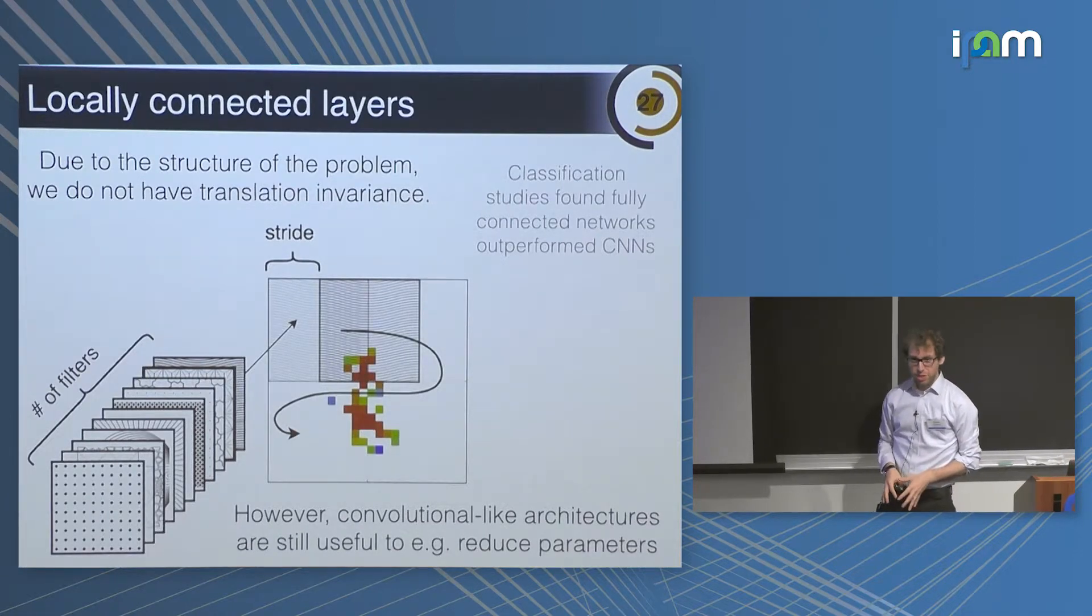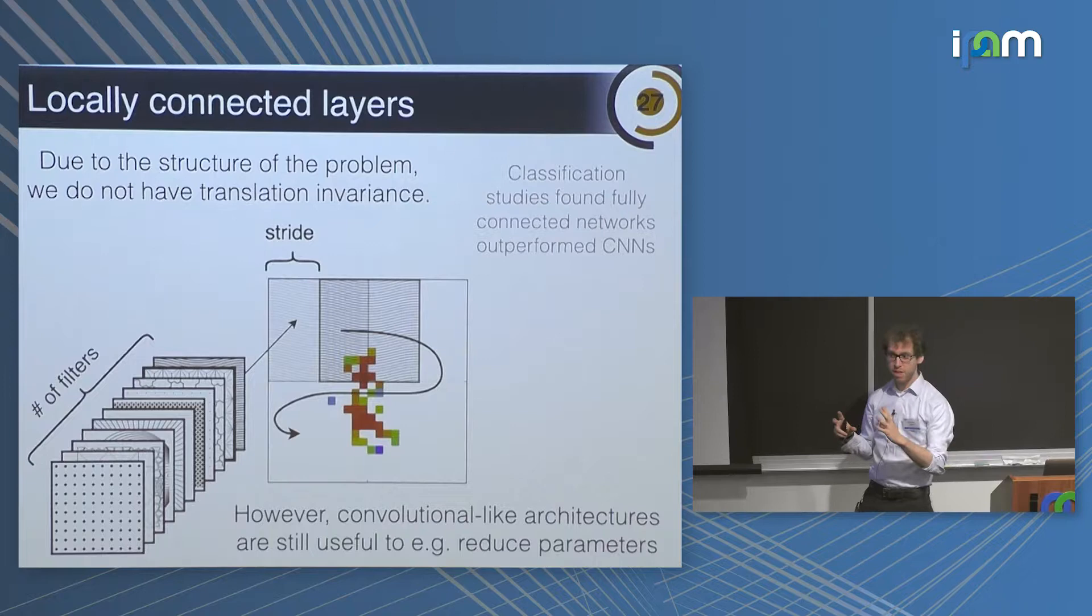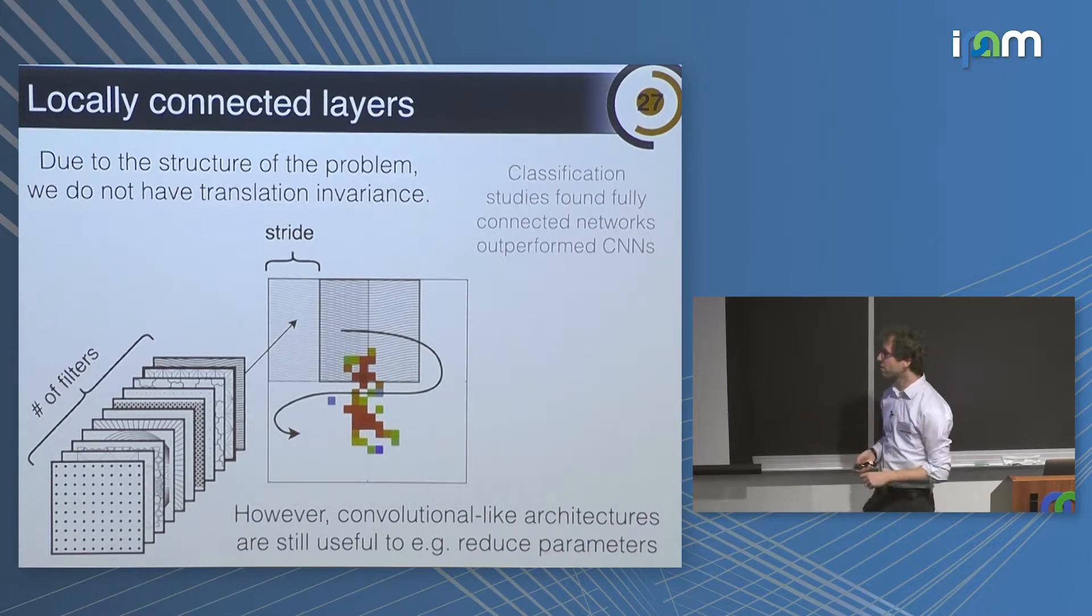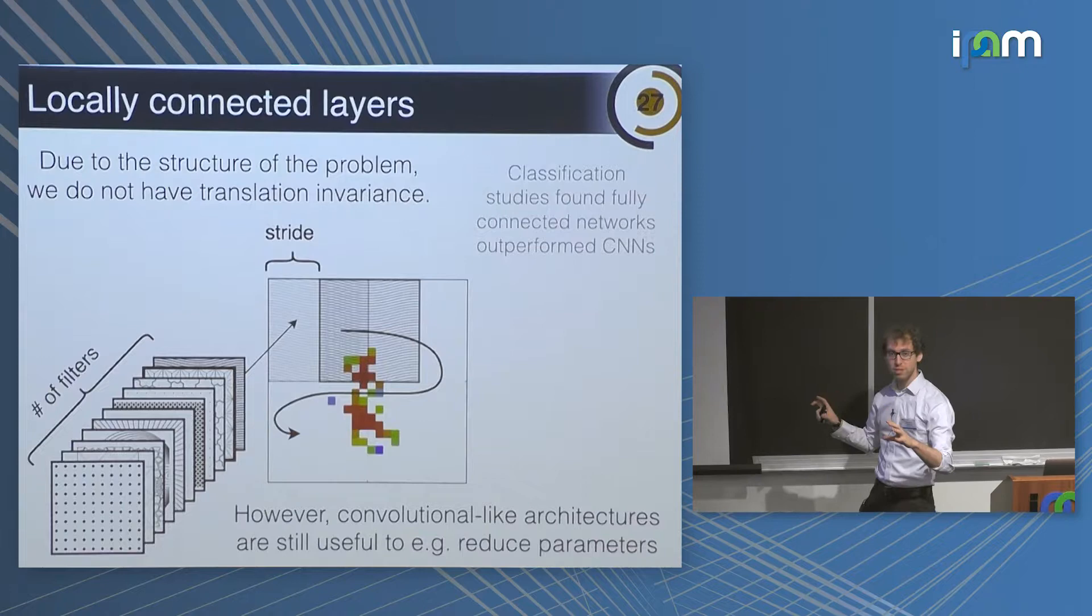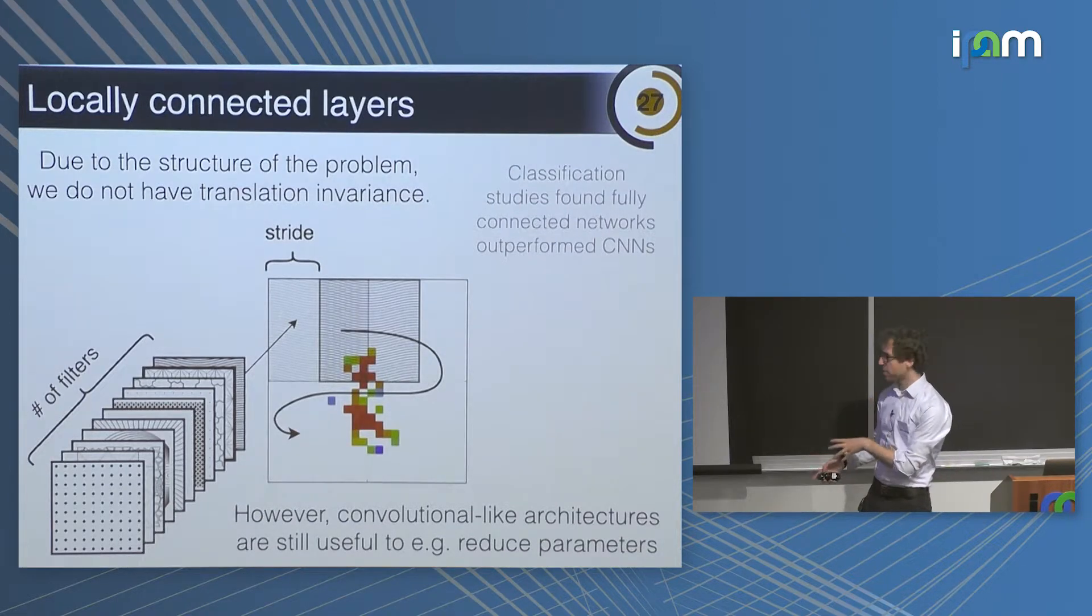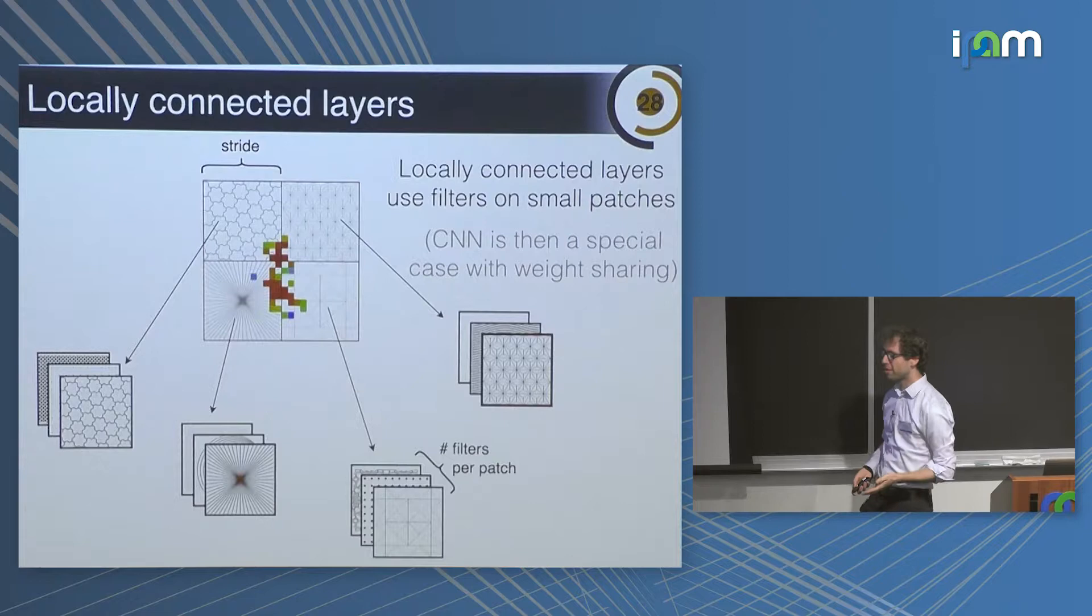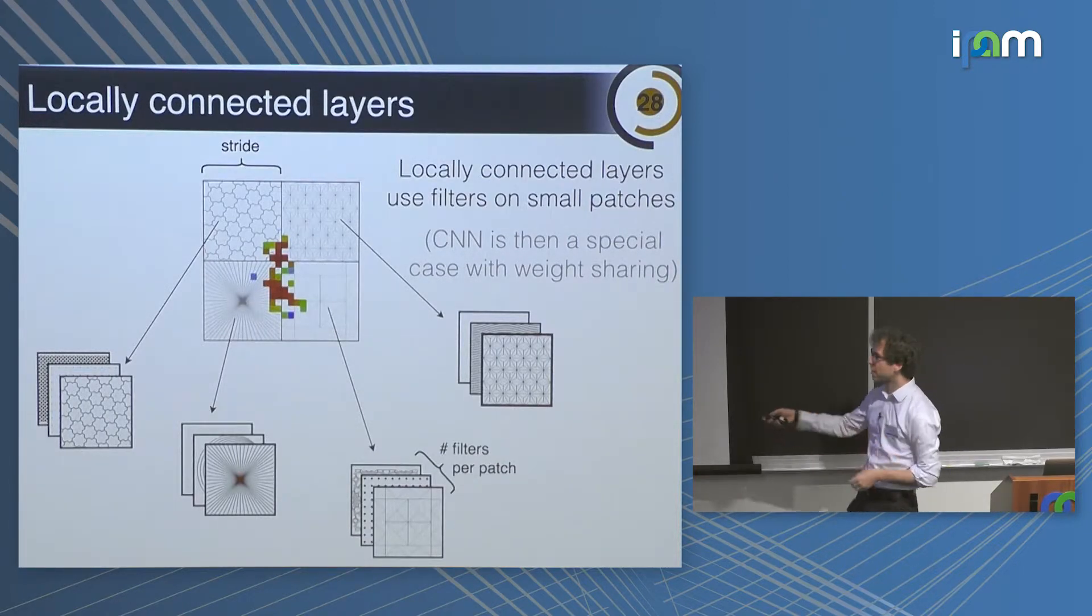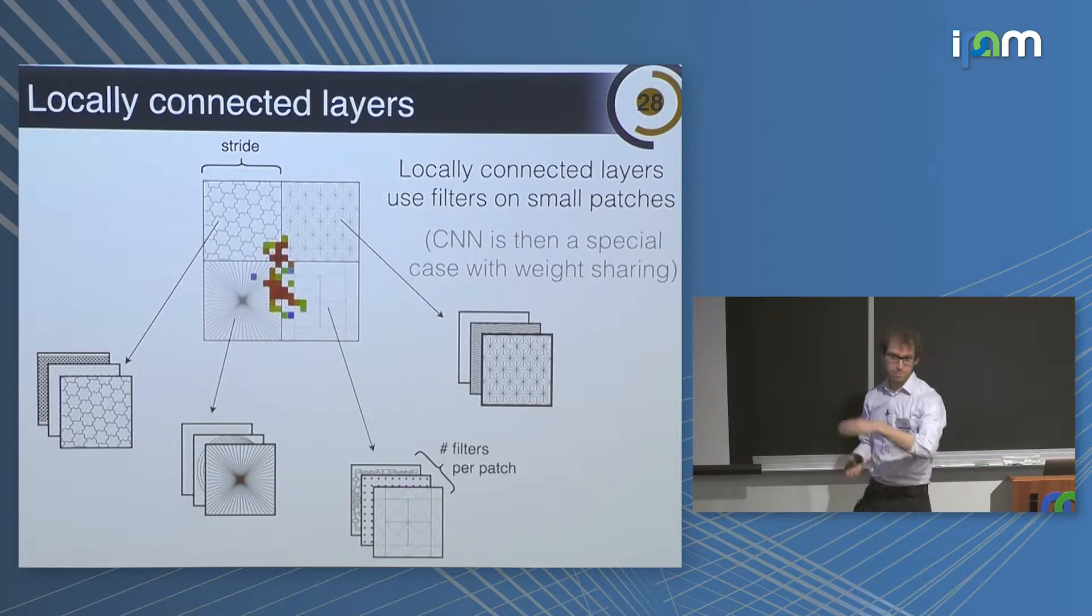Now I'll say a bit more about these locally connected layers. For images, the first thing you might think of using is a convolutional neural network. However, the way these images are set up, we've already centered them and there's no rotational or translational degrees of freedom. A convolutional neural network is actually not that great because we don't have any translation invariance. However, it would be great if we had some weight sharing so we could reduce the number of parameters. One compromise between having full weight sharing in a CNN and full no weight sharing with a fully connected network is to have a locally connected network, which is basically the same thing as a CNN but in patches.